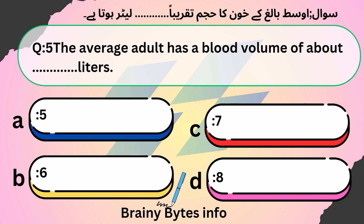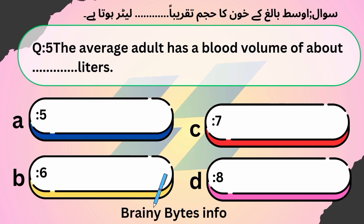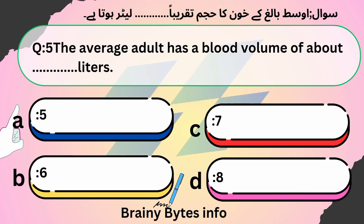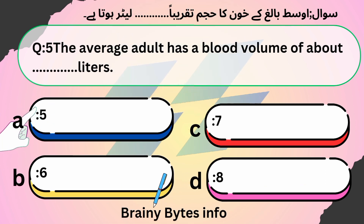The average adult has a blood volume of about how many liters? A. 5, B. 6, C. 7, D. 8. Answer: A. 5.